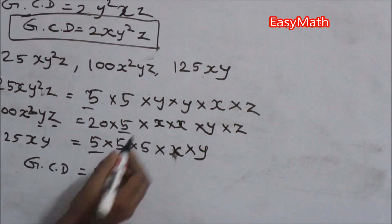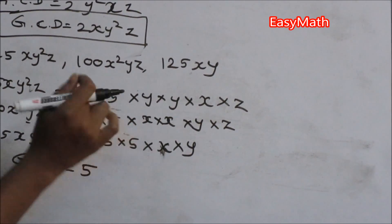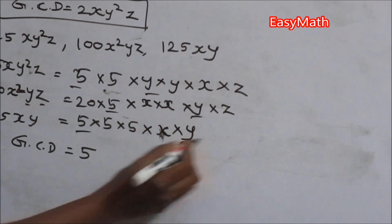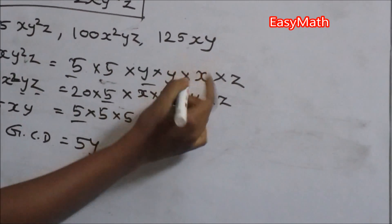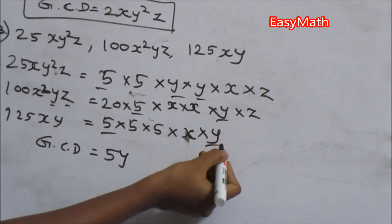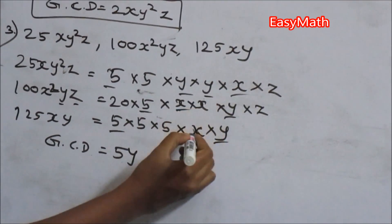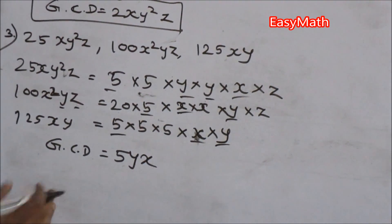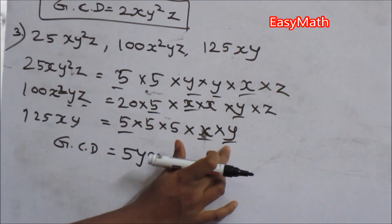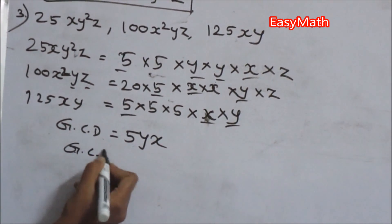For 125xy, there is no additional 5 common to all three polynomials. Checking y: there is no y in the third polynomial either. x is present in all three. z is present in the first and second, but not in 125xy, so z is excluded.